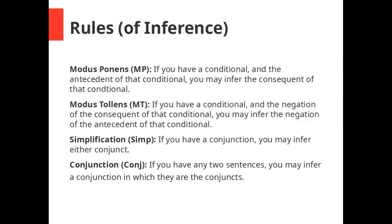This is how to do a proof, part two. In the previous video, which I will link in the description, we went over the first four rules for our proof system: modus ponens, modus tollens, simplification, and conjunction. In this video, we're going to add four more of these rules.